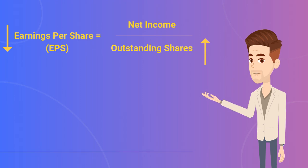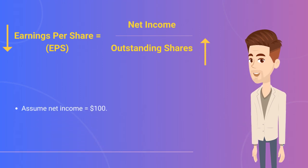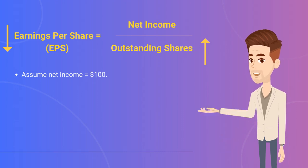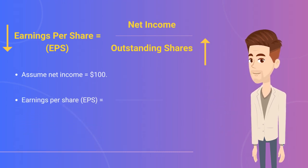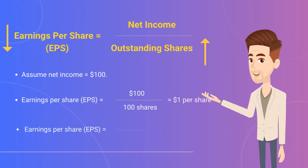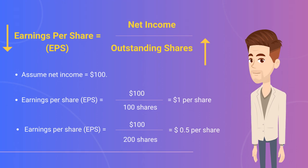Let's go back to the same example we had earlier. To make it easy, let's assume that the net income is not changing from year to year and it is $100. So when the outstanding shares were 100 shares, then the earnings per share was $1. But when the outstanding shares increased to 200 shares, the earnings per share is 50 cents only.